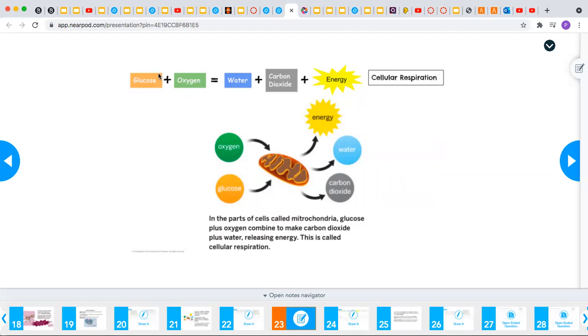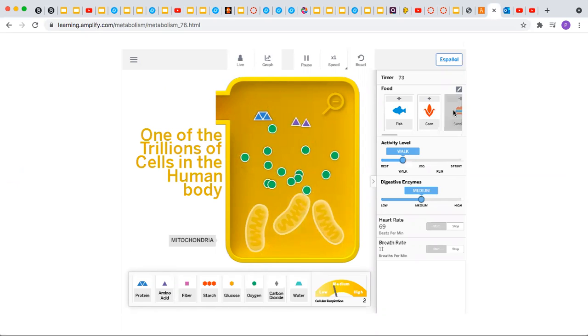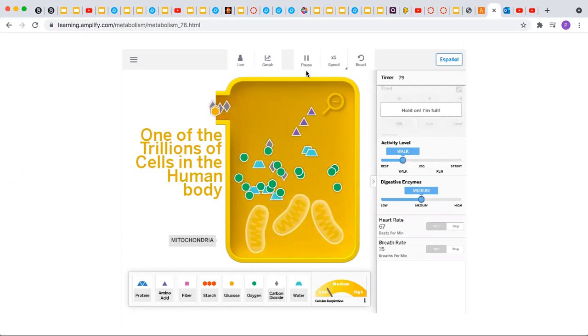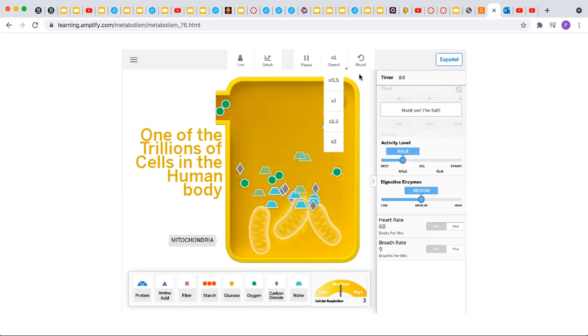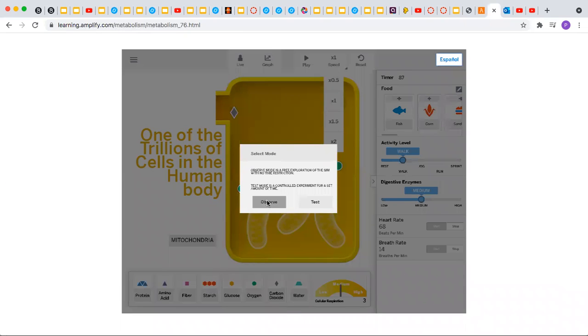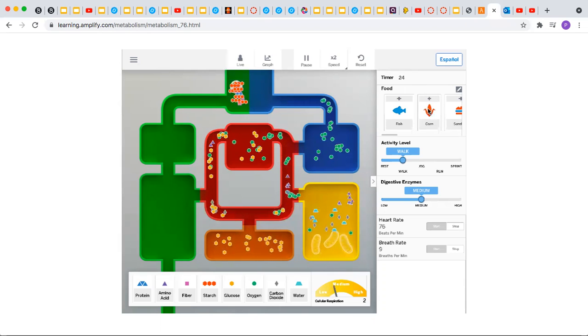So glucose plus oxygen yields water, carbon dioxide, and energy. And this is called cellular respiration. So I'm going to go to the cell of the body. I'm going to feed the person some sandwiches. Actually, I want to feed them corn because it'll be easier to see. So I'm going to feed the person some corn.